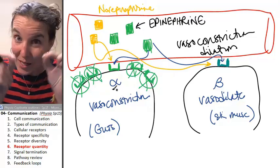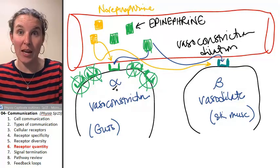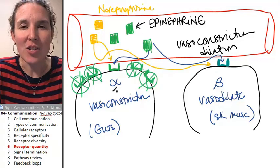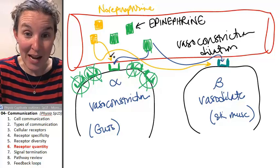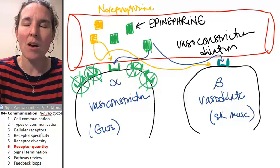Changing the number of receptors can help you fine-tune the information that you receive. Okay. How do you make the message stop? Because if a molecule binds, how do you stop receiving the message? Think about that.